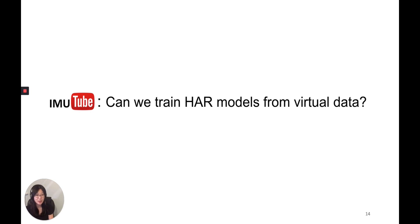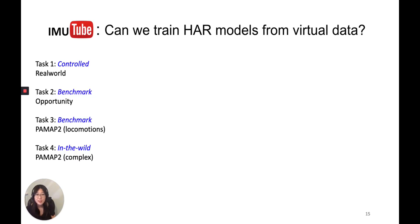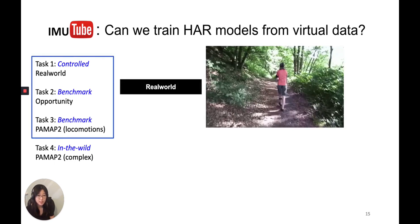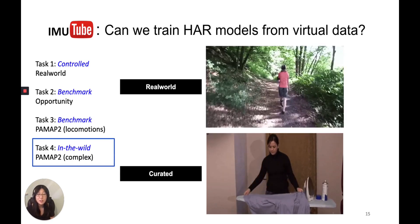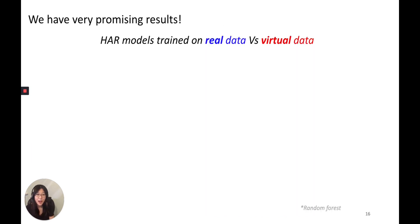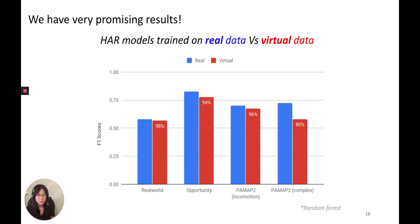I'm Katherine Tong from Oxford. Now that we have introduced the IMU2 pipeline, we want to ask: can we train HAR models from virtual data? To answer this question, we performed a set of extensive experiments evaluated on common HAR benchmarks. Specifically, we extracted virtual data from videos coming from real-world datasets, and we also created a large-scale in-the-wild video dataset including videos on YouTube. Our results are very promising. Here's a chart comparing the performance of a random forest trained on real data versus virtual data in four different scenarios, and we see clearly that their F1 scores are very comparable.